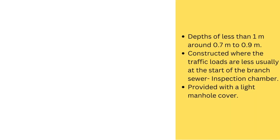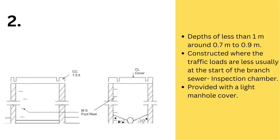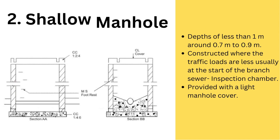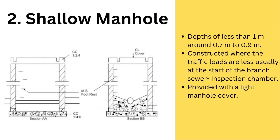Shallow manholes, on the other hand, have depths of less than 1 meter — around 0.7 to 0.9 meters. They are constructed where the traffic loads are less, usually at the start of the branch sewer. As such, they are provided with a light manhole cover.